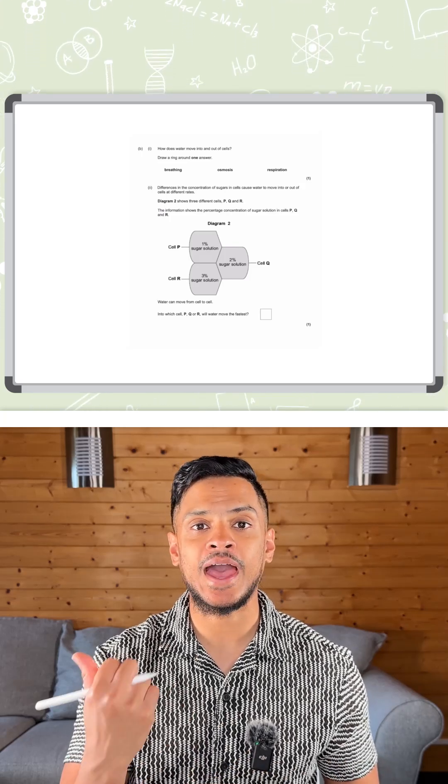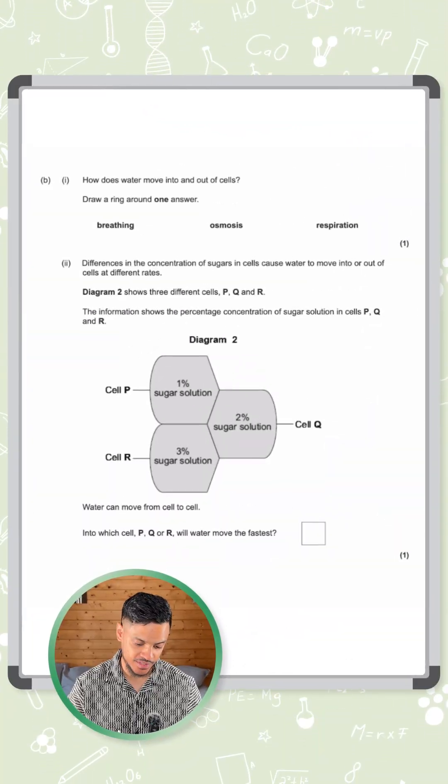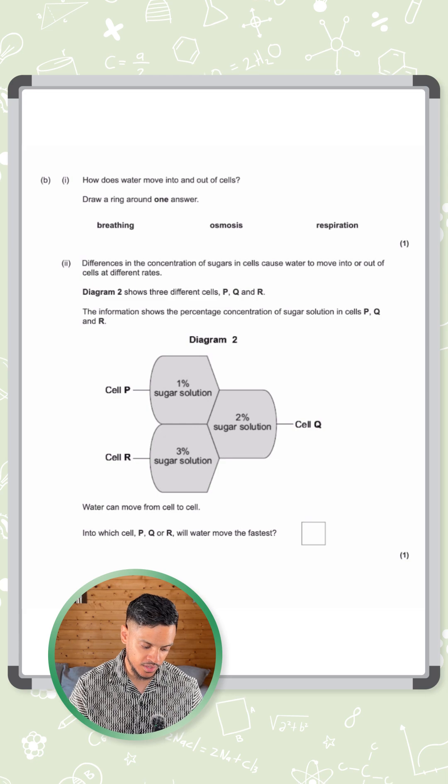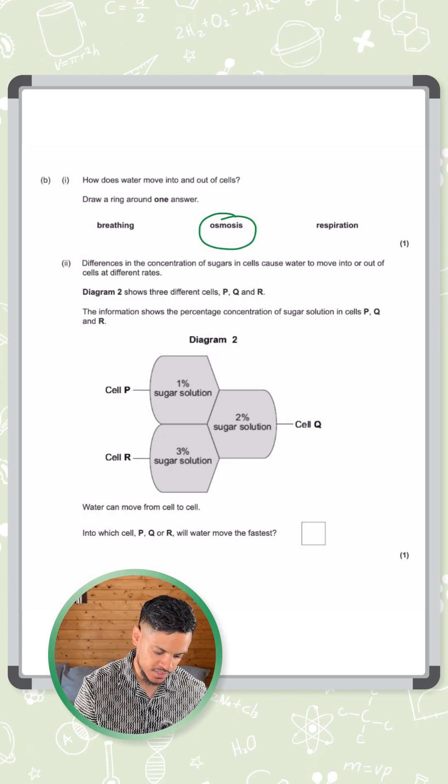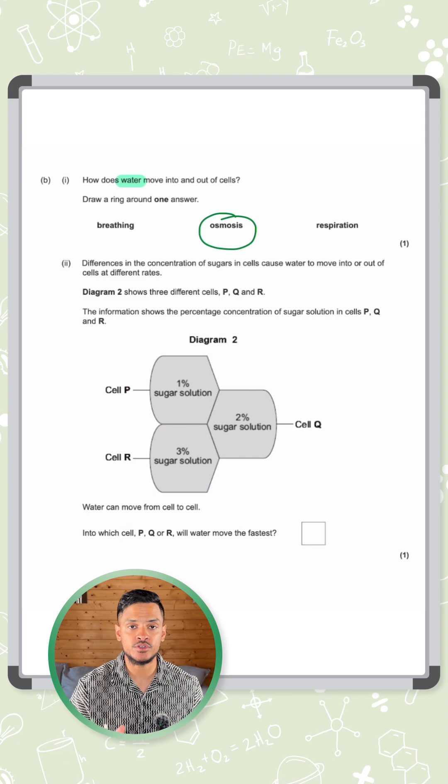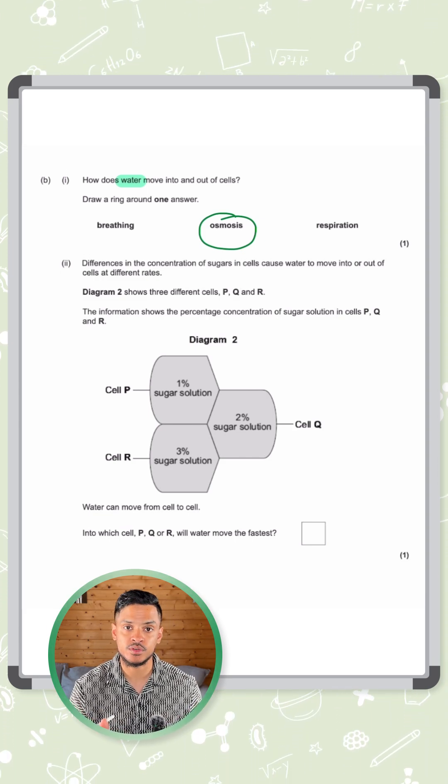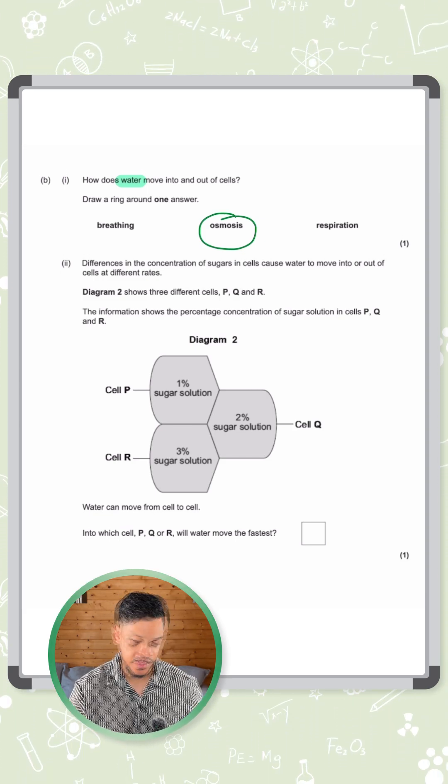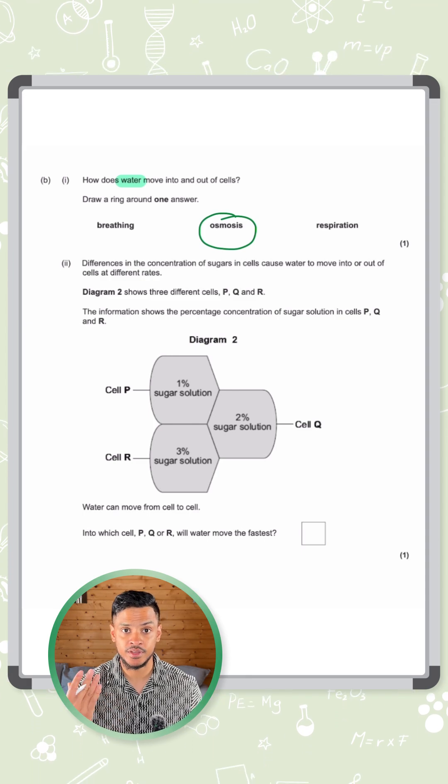How does water move into and out of cells? That's what this exam question is asking for one mark. The answer here is osmosis. The key here is that it talks about water, and diffusion of water is basically osmosis. That's how water moves in and out.